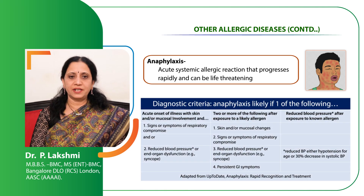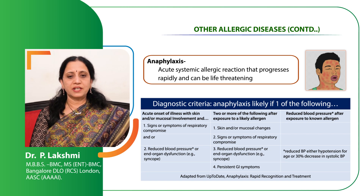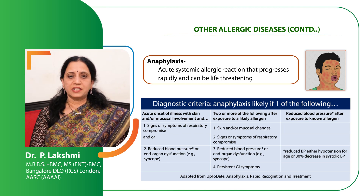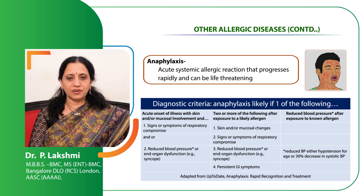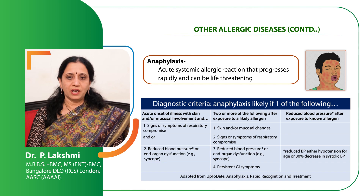There are certain diagnostic criteria to make a diagnosis of anaphylaxis. At least 2 or more of the following symptoms after exposure to an allergen should be present: skin or mucosal changes such as flushing, hotness, and urticarial rashes; signs or symptoms of respiratory compromise such as difficulty in breathing or breathlessness; reduced blood pressure or end-organ dysfunction such as syncope; and persistent gastrointestinal symptoms such as retching, nausea, and vomiting. At least 2 of these symptoms should be present to make a diagnosis of anaphylaxis.